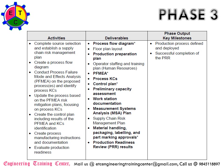These are all the major deliverables from Phase 3 of APQP. The phase output and key milestone is: production process defined and deployed — how the part is going to be produced, the process is defined and deployed — and successful completion of PRRs (Production Readiness Reviews). These are the main deliverables from Phase 3 of the APQP.